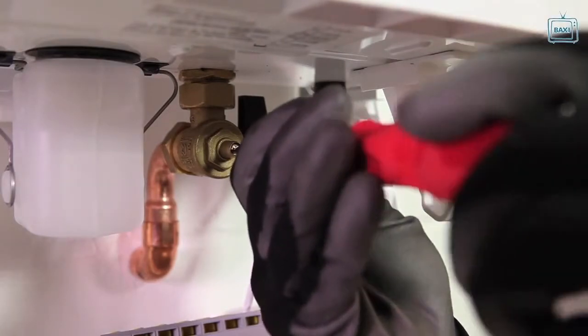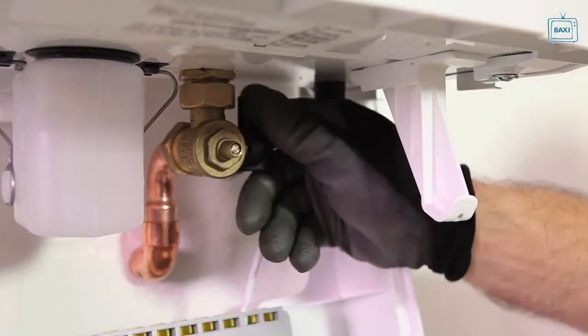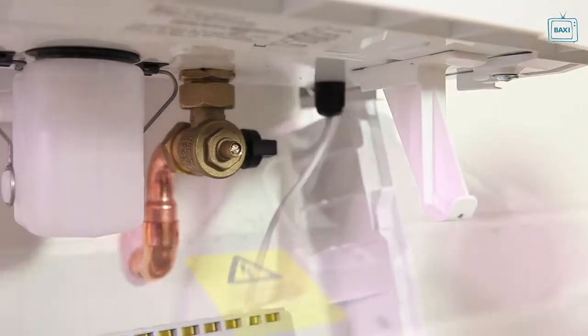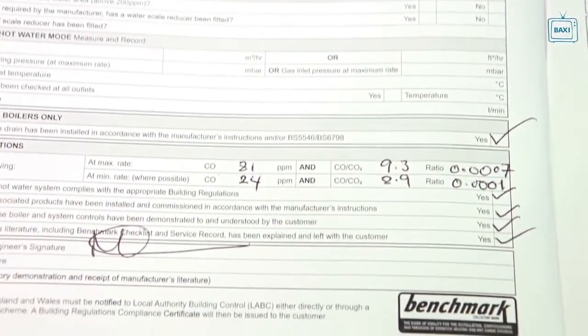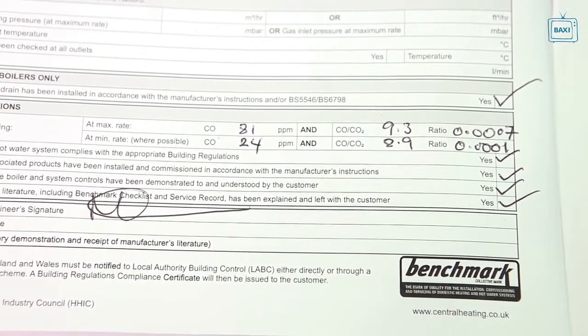Ensure all test points are closed and the front panel is correctly fitted and secured. Finally, complete the benchmark checklist, recording the carbon monoxide and combustion ratings.